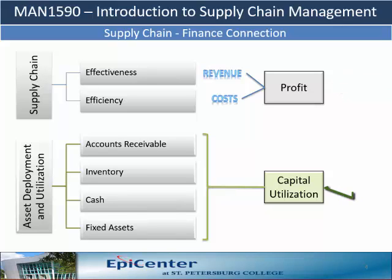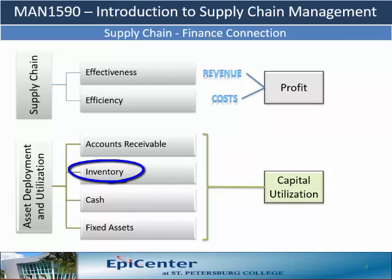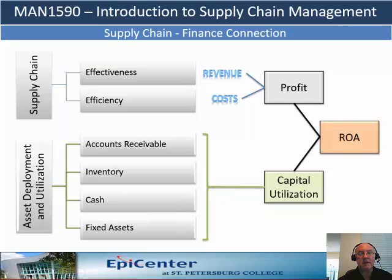Capital utilization is determined by how well assets are deployed and utilized. The financial implication of inventory is the amount of capital required to fund that inventory, where the funding decision may compete with other capital projects, such as the addition of new capacity. In conclusion, an organization's financial performance is judged by the profit it generates in relationship to assets utilized, which is measured by return on assets.